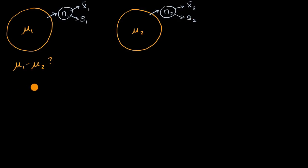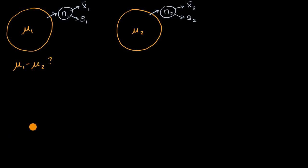Assuming that our conditions for inference are met — and we've talked about those before — we have the random condition, we have the normal condition, and we have the independence condition. Assuming those conditions are met, as discussed in other videos for means, let's think about how we can construct a confidence interval.